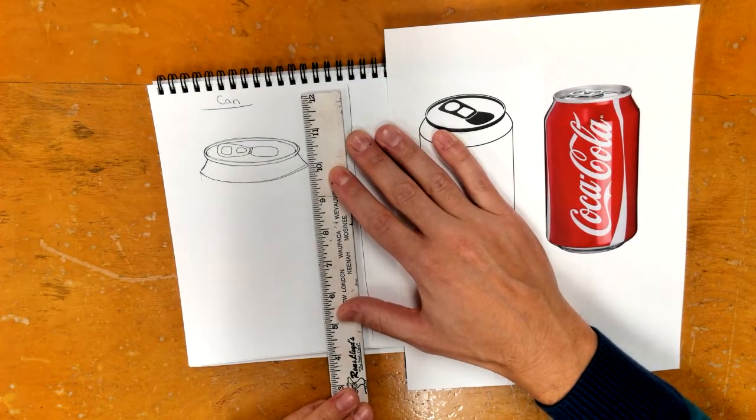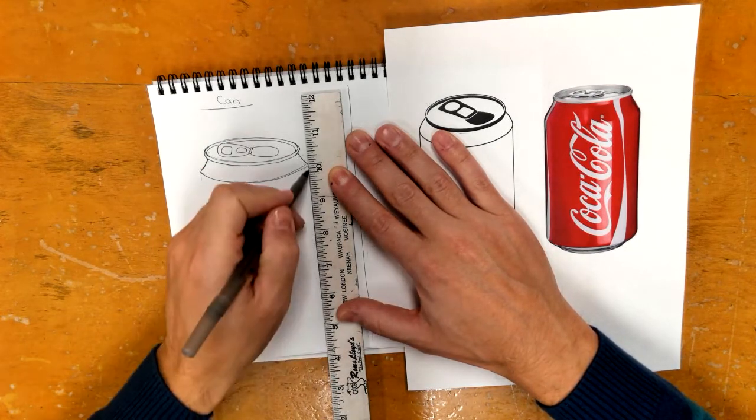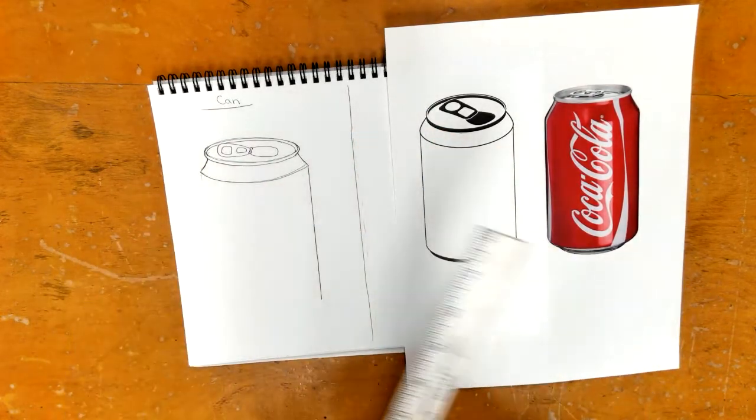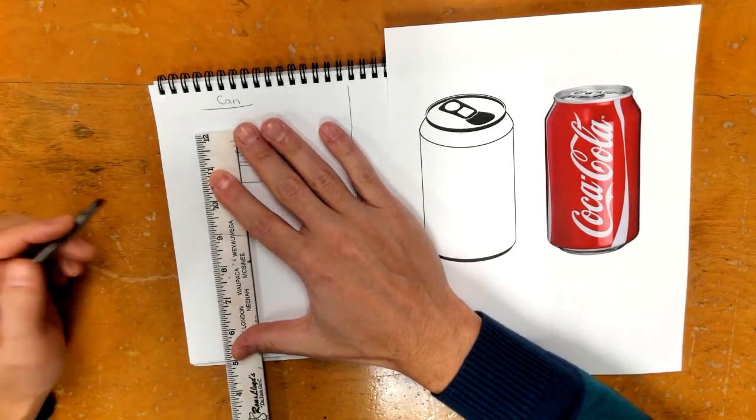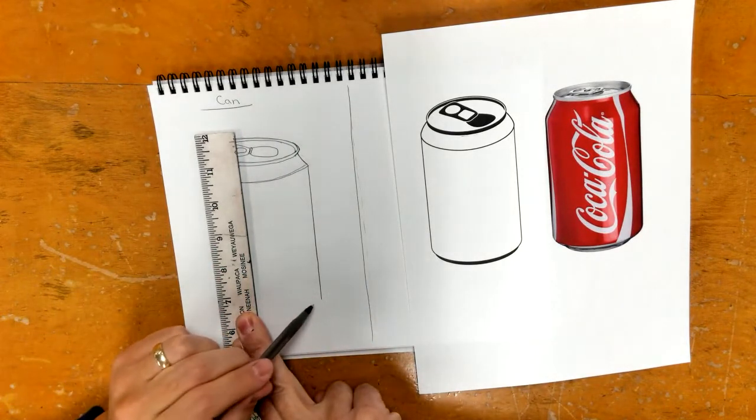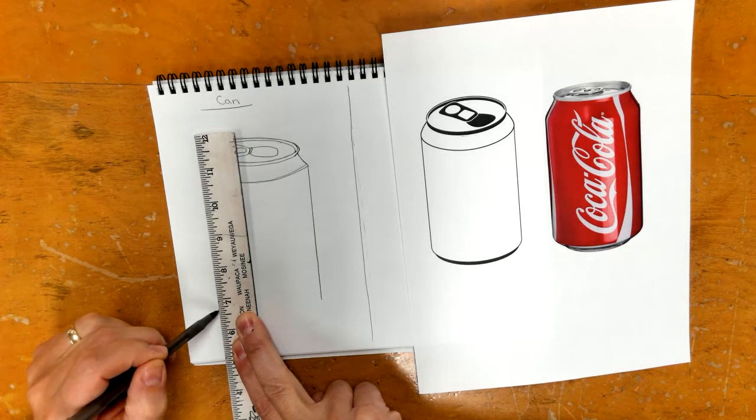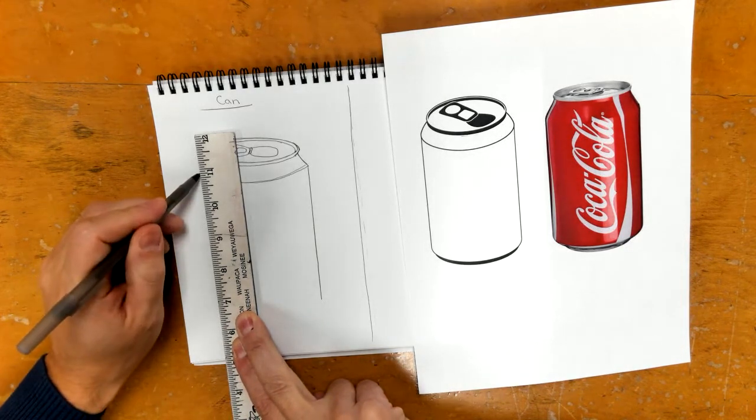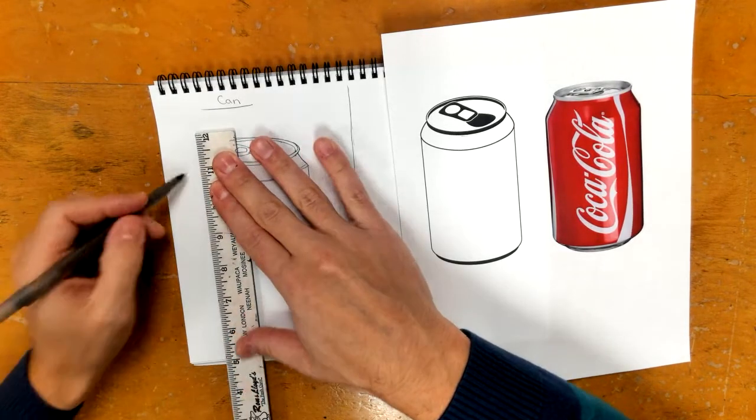Then from here all we're doing is drawing our straight line down. Sometimes I like to look at where this one is and then I'll try to make a dot on the other side so I know where to stop. And evidently I need to hold my ruler down better, there we go.